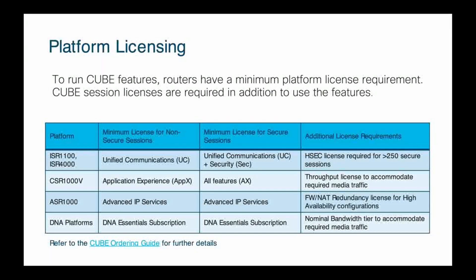ASR 1000 is pretty straightforward for both secure and unsecure sessions — Advanced IP Services is what you need. If you are doing box-to-box redundancy, you will need the Firewall and NAT redundancy licenses from a high availability perspective. These are not very costly, but you do need them and they will trip you up when you go to configure it if you don't have them.